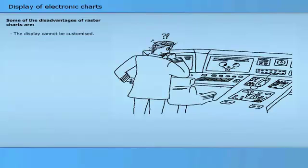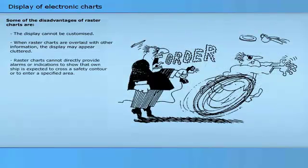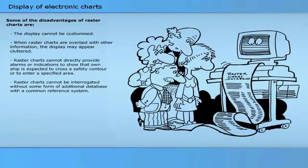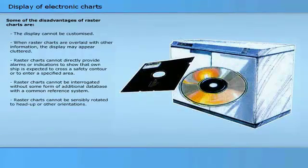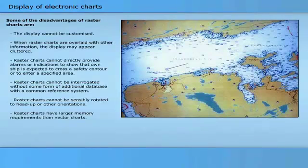Some of the disadvantages of raster charts are: the display cannot be customised; when raster charts are overlaid with other information, the display may appear cluttered. Raster charts cannot directly provide alarms or indications to show that own ship is expected to cross a safety contour or to enter a specified area. Raster charts cannot be interrogated without some form of additional database with a common reference system. Raster charts cannot be sensibly rotated to head-up or other orientations. Raster charts have larger memory requirements than vector charts.